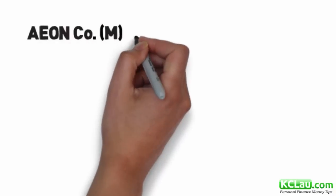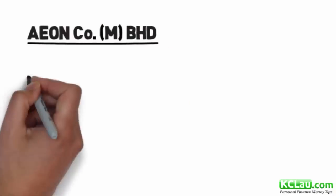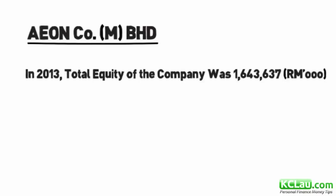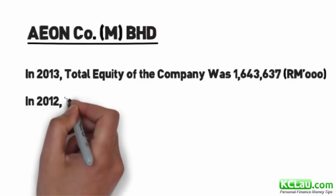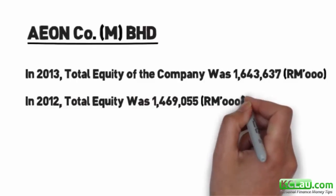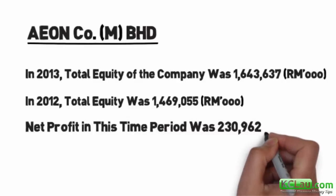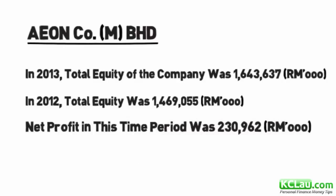Now let's get to the second example. According to the Aeon annual report of 2013, the total equity attributable to the owners of the company was 1.643 billion and 2012 was 1.47 billion. The net profit of the company in this period was 230 million.